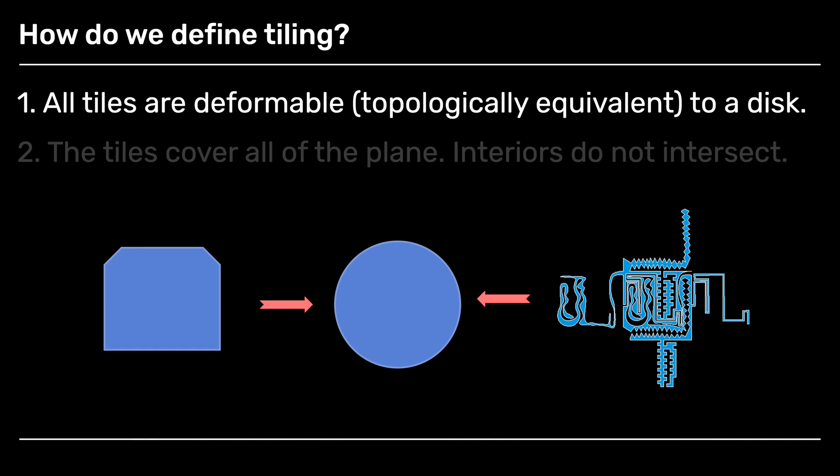So in particular, what I really want is that all of my tiles must be deformable to a disk. You see that tile on the left, I could deform it to a disk without cutting or pasting. If it were made of rubber, I could deform it to look like a disk. And that weird tile that I showed you before, even though that's not so obvious, could also be deformed into a disk. So that's my number one property that must be true for a tiling.